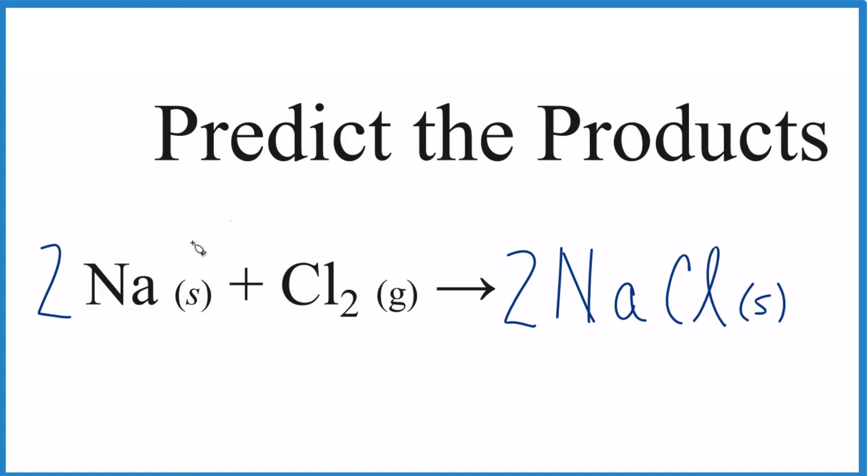The key to predicting this reaction: you have two different atoms, so they're probably going to come together in a synthesis or combination reaction to give you one thing. Then you've got to worry about the charge though, since it's an ionic compound. This is Dr. B predicting the products of Na plus Cl₂.